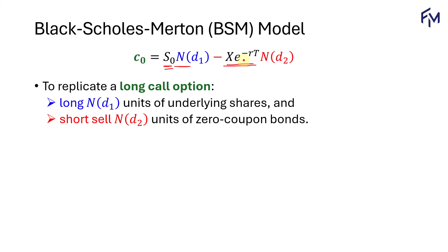They also call it the risk-free bonds. Now, to replicate the long call option, this has to be positive for the long. On the underlying side, this is a positive, so positive means we will long N of D sub 1 units of the underlying shares. And for the zero coupon bonds, the coefficient is negative — negative N of D sub 2 — so negative means we will short sell.